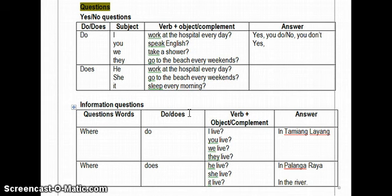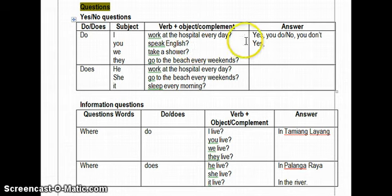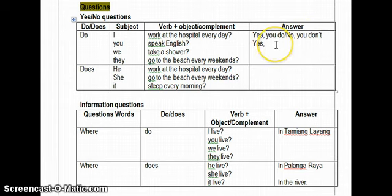Now, let's see how to make the question sentence. For yes/no questions in simple present tense, use do or does as the starting point. For example: 'Do I work at the hospital every day?' If asking about yourself, the answer is 'Yes, you do' or 'No, you don't.' For 'Do you speak English?' the answer is 'Yes, I do' or 'No, I don't.'